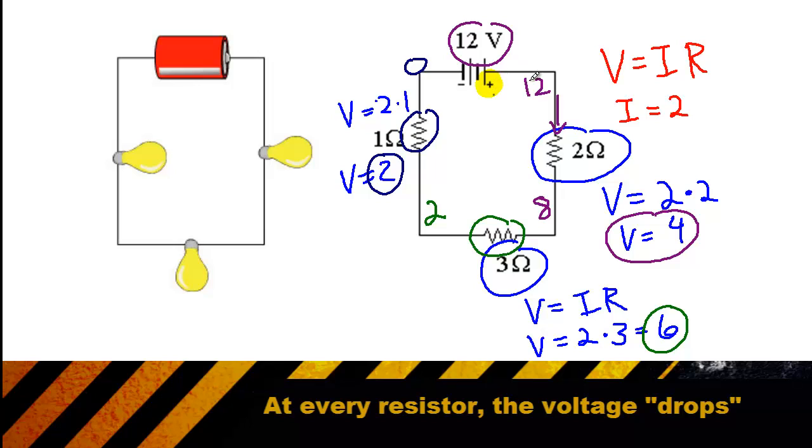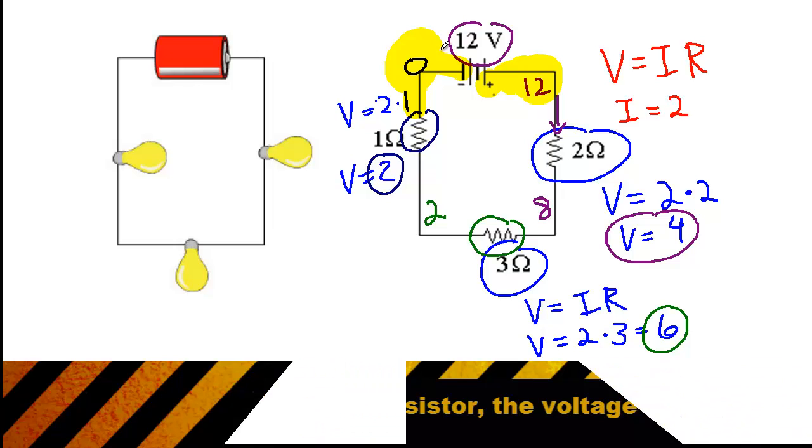Notice how on the positive side of the battery, our voltage is at a maximum. And the voltage slowly drops until on the line connecting to the negative side of the battery, our voltage is 0. That will always be the case. In other words, the voltage drop between all the resistors in the circuit will eventually consume the entire voltage in the circuit.